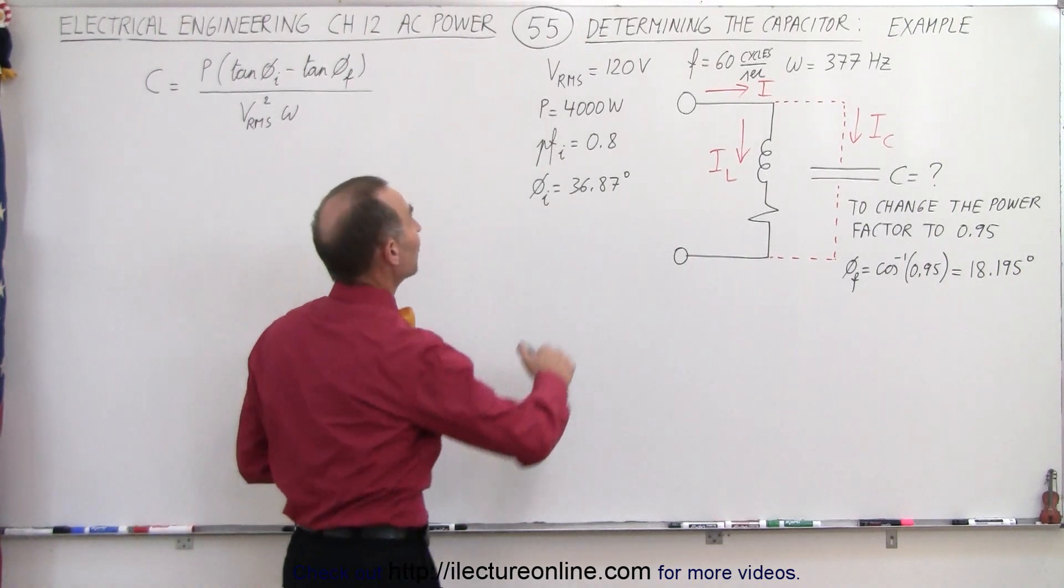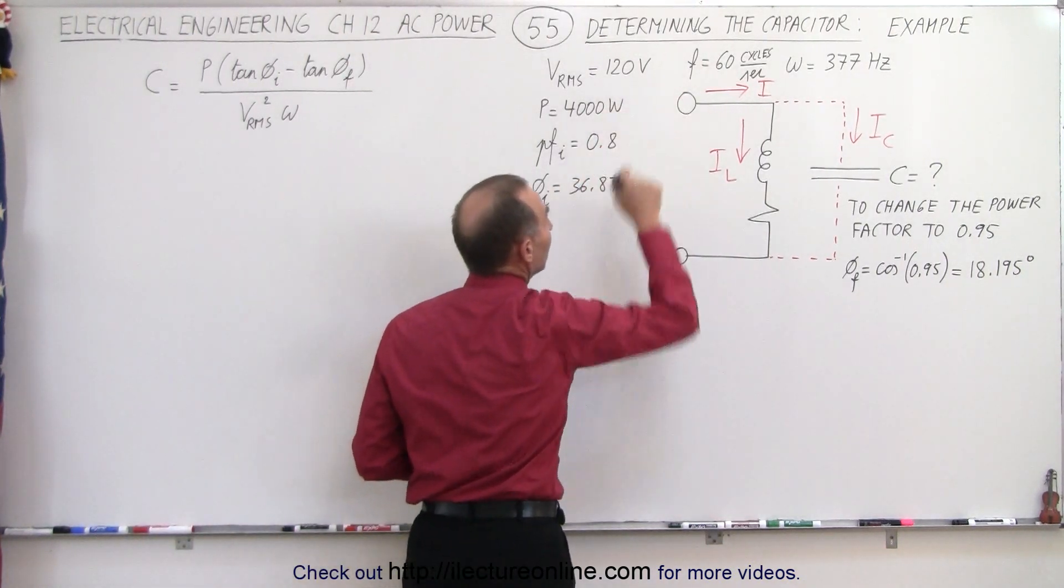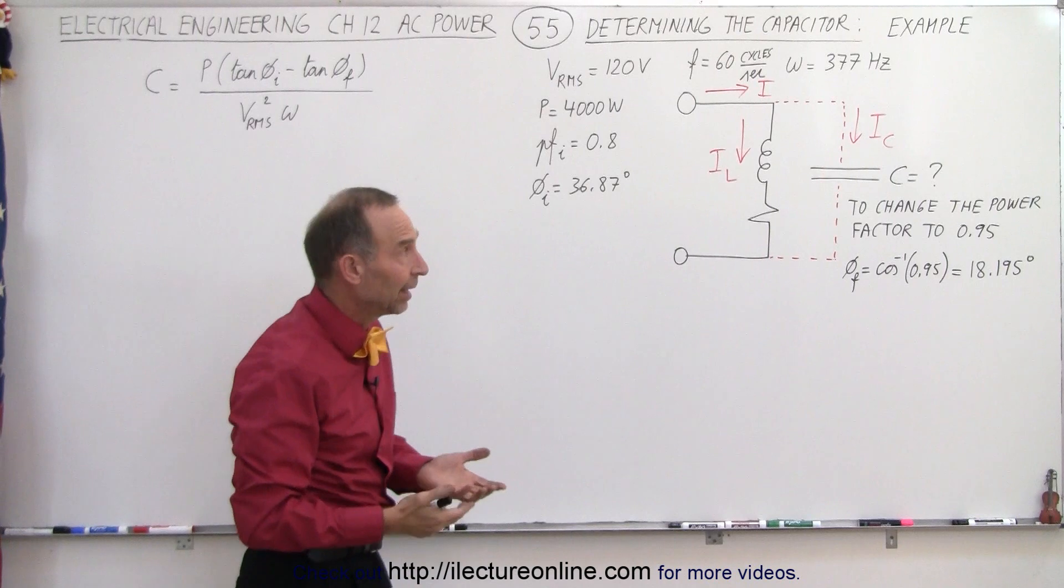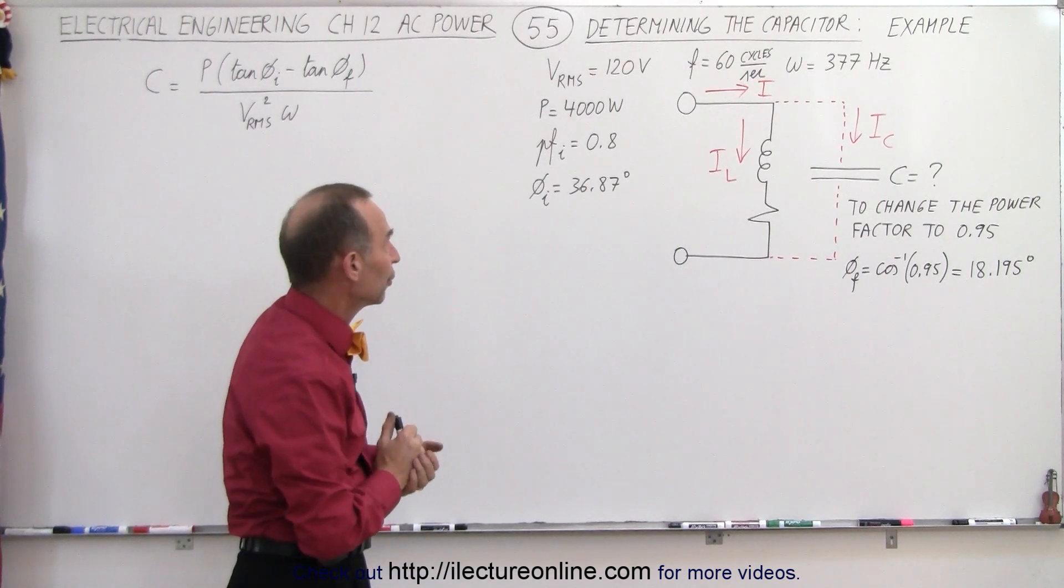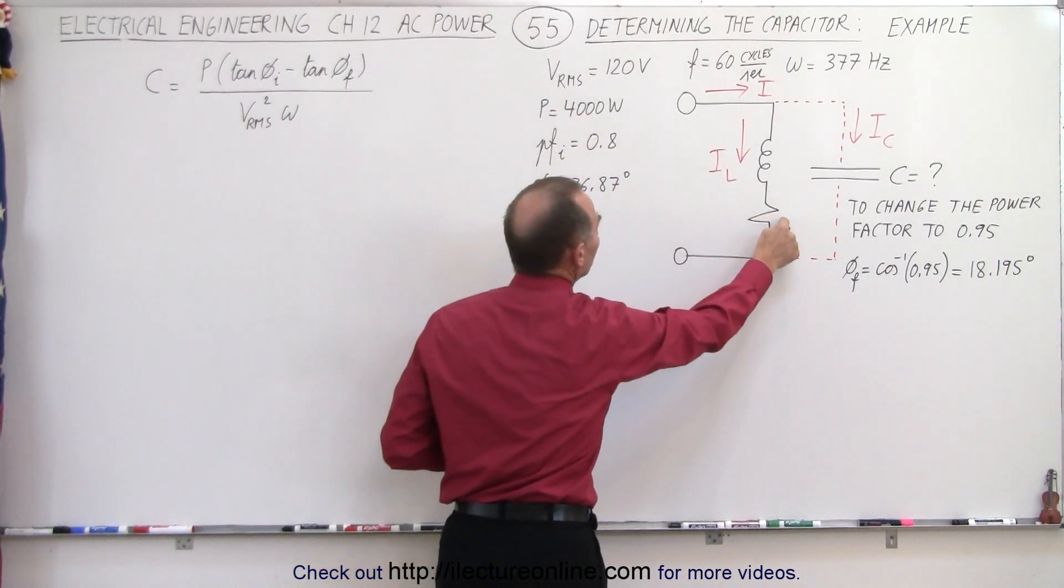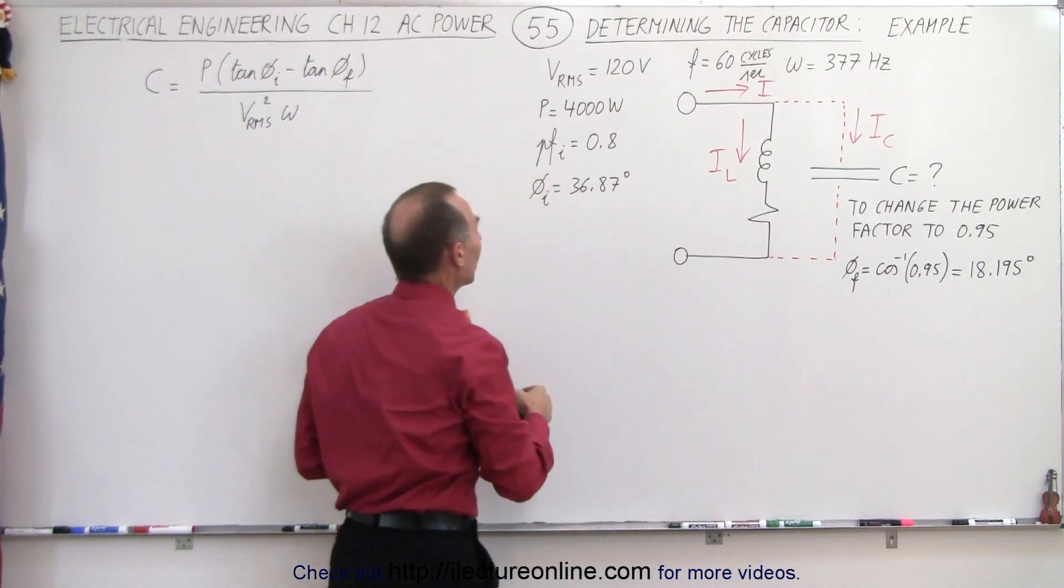And so this is the equation that we're going to use to find that correct capacitor. Let's say we assume that we have a VRMS of 120 volts at a frequency of 60 cycles per second, that's an omega of 377 hertz. Let's say the power requirement for the load resistor is 4000 watts.